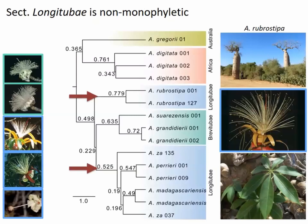Another key finding was that the four species of section Longitubae were not each other's closest relatives. Rubrosstippa was the earliest diverging, and the remaining Longitubae species share a more recent common ancestor with section Brevitubae — quite surprising given that morphology and pollination syndromes would predict them to be closest relatives.